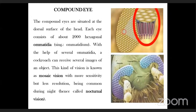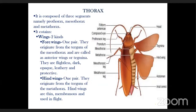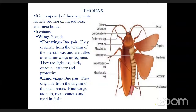The next body part is the thorax, composed of three segments: prothorax, mesothorax, and metathorax. It has two pairs of wings. The forewings originate from the tergum of the mesothorax and are called tegmina — they are flightless, dark, opaque, and leathery, functioning to protect the body by covering it. The hind wings originate from the tergum of the metathorax and are thin, membranous, and used for flight.